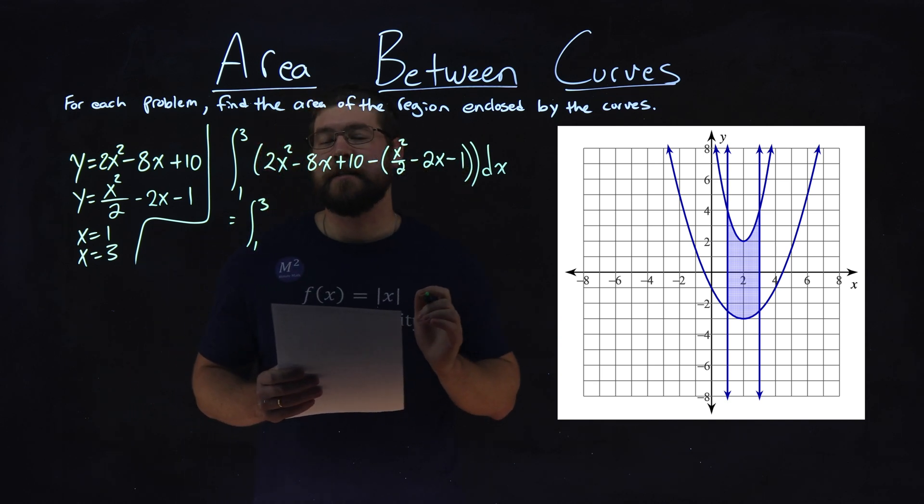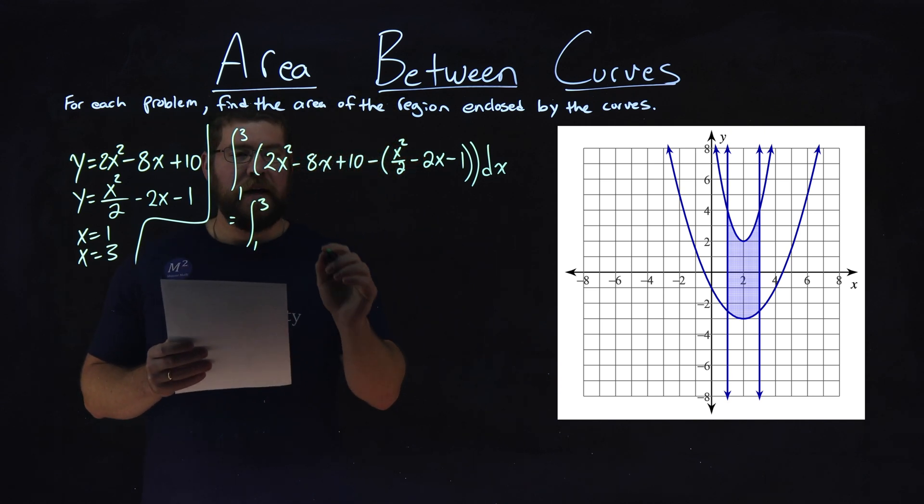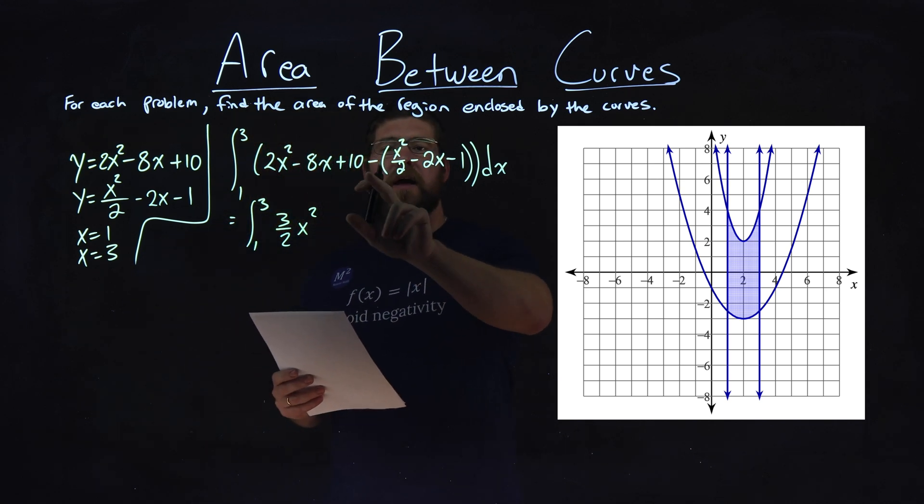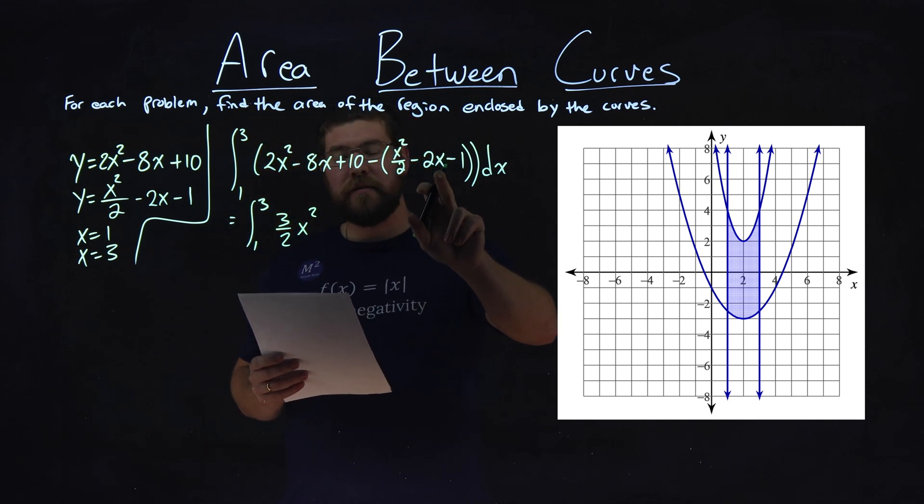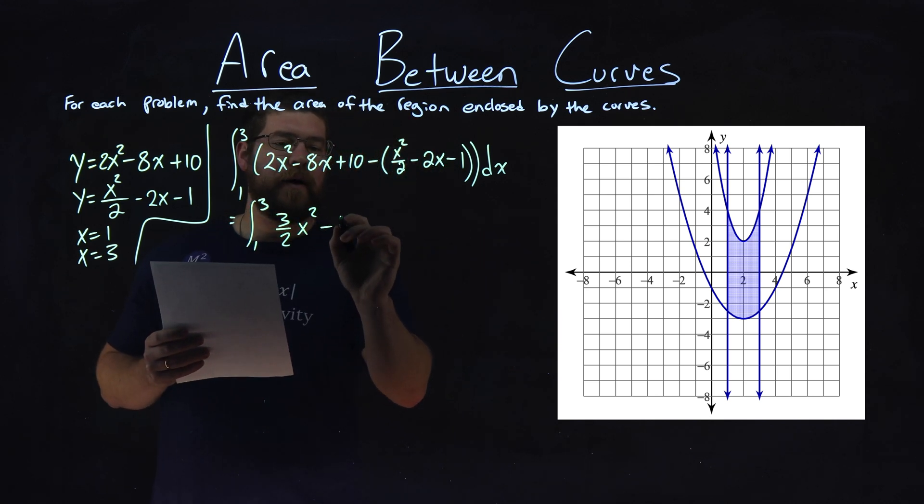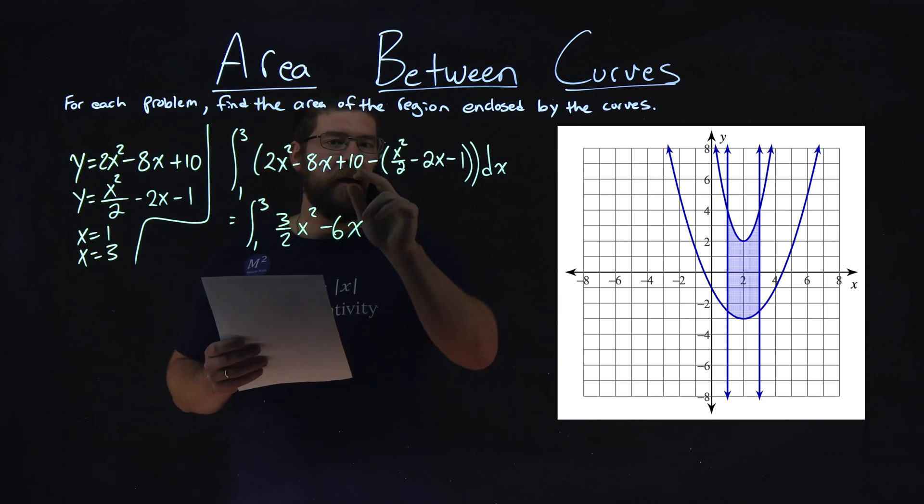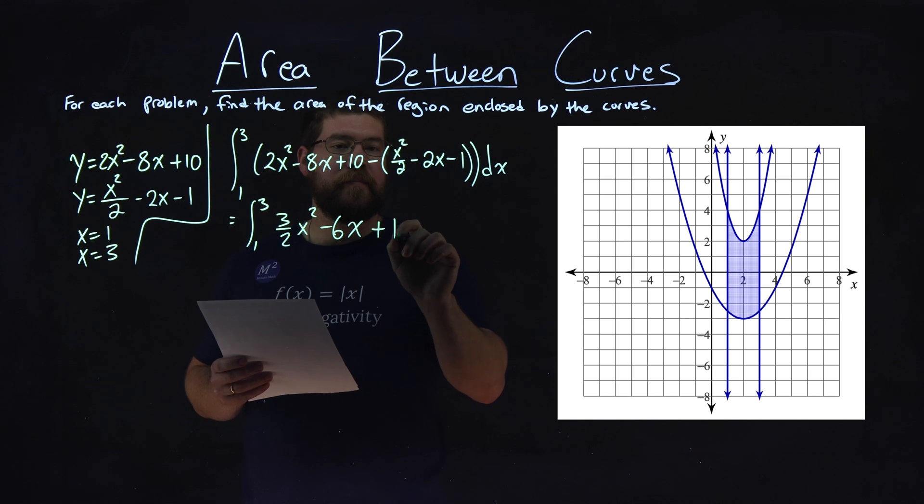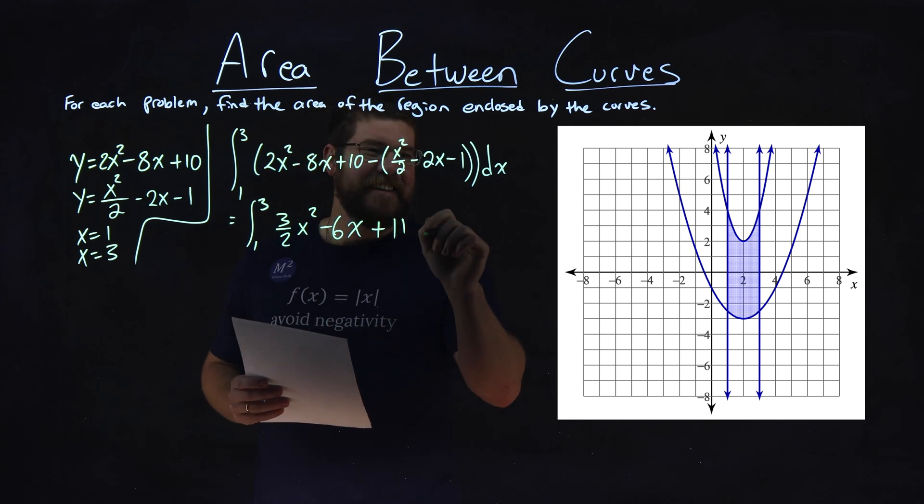and 2x squared minus x squared over 2 is 3 halves x squared. We have negative 8x minus a negative 2x is plus a positive 2x, so we have minus 6x right here. Then 10 minus a negative 1 is plus a positive 1, or plus 11 dx.